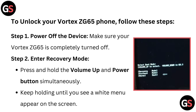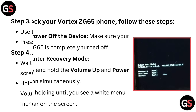Step 1: Power off the device. Make sure your Vortex ZG65 is completely turned off. Step 2: Enter recovery mode. Press and hold the volume up and power button simultaneously. Keep holding until you see a white menu appear on the screen.